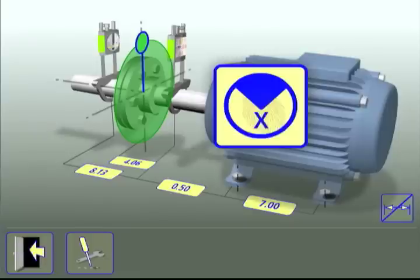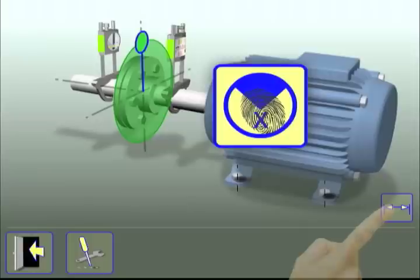Now all the dimensions have been entered and are displayed on screen. Note that touching the No Dimensions icon hides the display of dimensions. The icon changes to a display dimensions icon, which when touched, re-displays the dimensions.